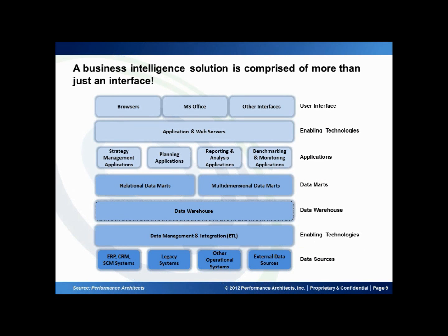Oftentimes when people think of business intelligence, they think of the top layer of the stack — how they're going to access this information — when in actuality there are multiple systems you need to think about. These include how clean is your transactional data coming from things like your enterprise resource planning, customer resource management, or Salesforce automation and other systems. Do you have data sitting in Access databases or spreadsheets that's not in a transactional system?